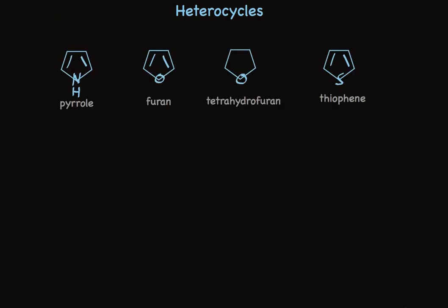Heterocycles are ring compounds that have at least one atom that's not carbon. Many typical examples are five-membered rings. The most common ones are pyrrole, furan with oxygen, tetrahydrofuran also has oxygen but no double bonds, and thiophene.